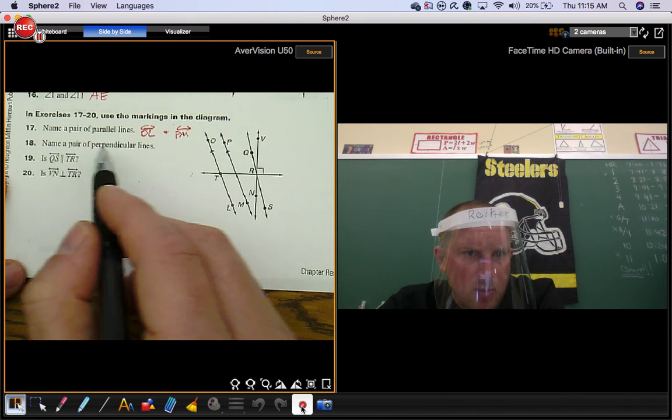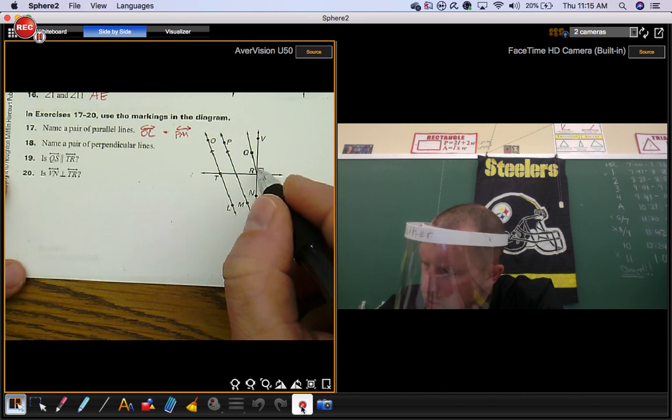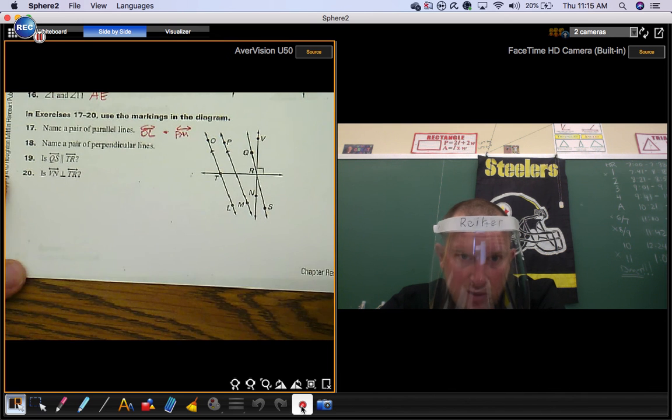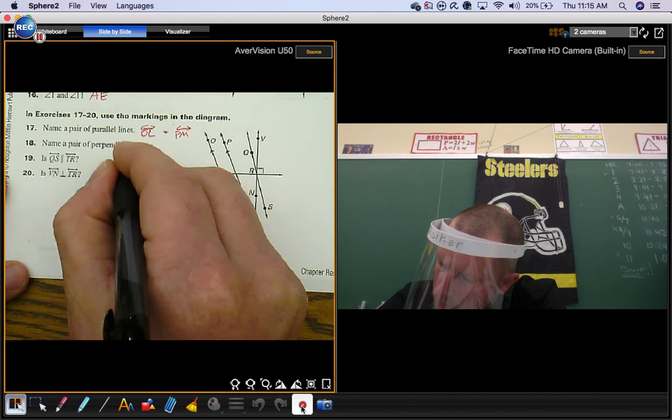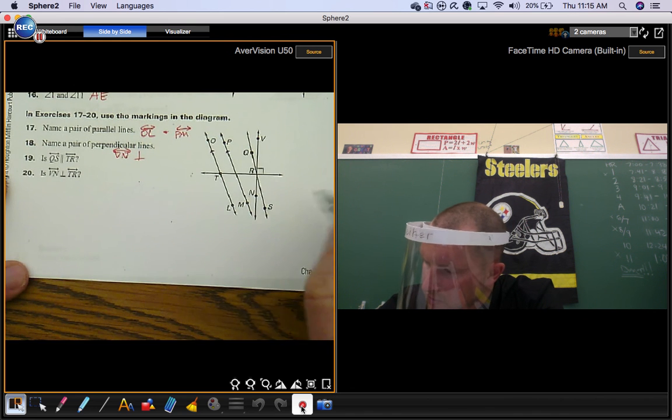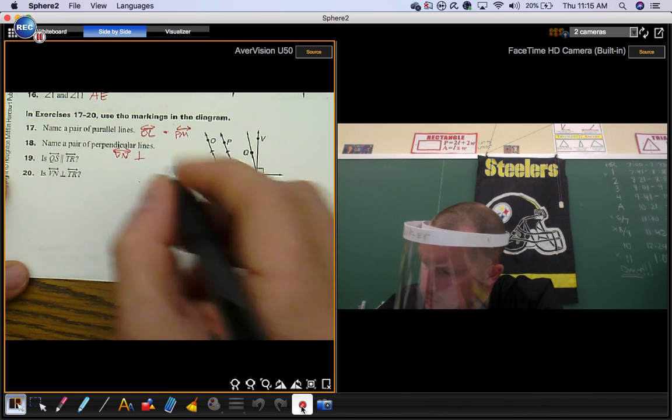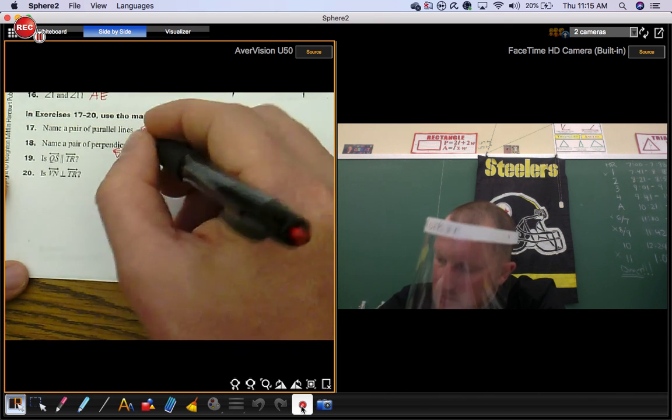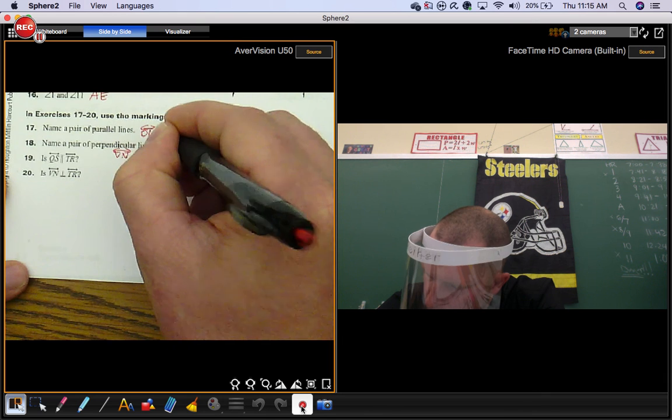Number 18, name a pair of perpendicular lines. Well, that's the mark you're looking for right there. That means this line and this line are perpendicular. So line VN is perpendicular to line TR. Notice I used the symbol there. I could have done the same thing here. I could have used the parallel symbol.